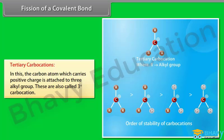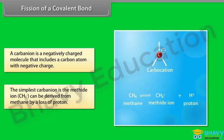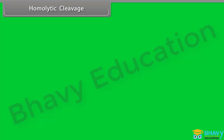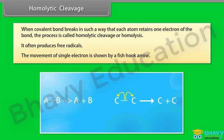A carbanion is a negatively charged molecule that contains a carbon atom with a negative charge. The simplest carbanion is the methide ion, derived from methane by loss of a proton. In homolytic cleavage, a covalent bond breaks such that each atom retains one electron of the bond — this process is called homolysis and often produces free radicals. The movement of a single electron is shown by a fishhook arrow.